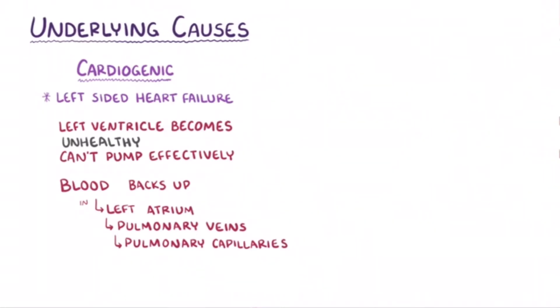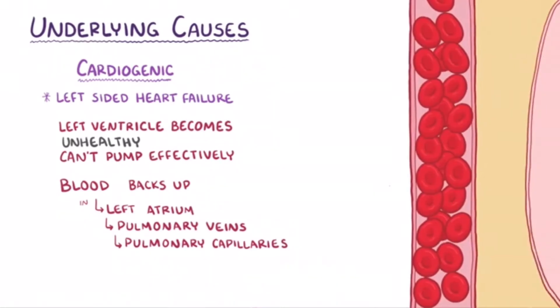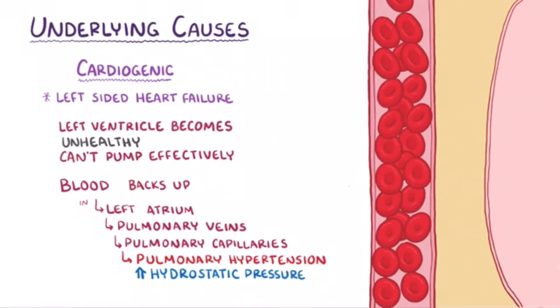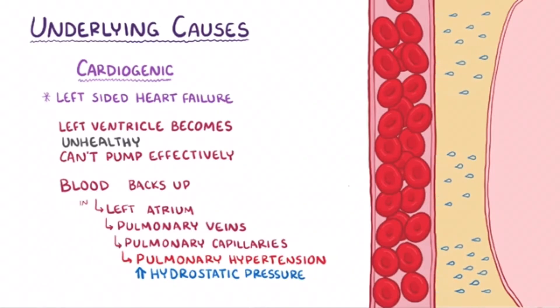The extra blood in the pulmonary capillaries causes pulmonary hypertension, which is an increase in the hydrostatic pressure of the pulmonary blood vessels, and this pushes more fluid into the interstitial space of the lungs, which leads to pulmonary edema.